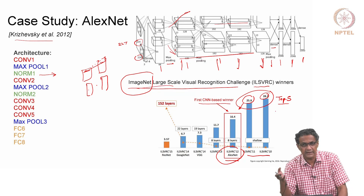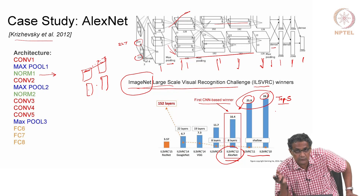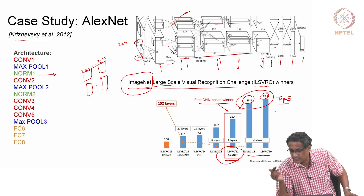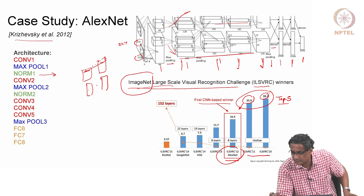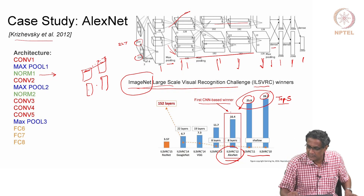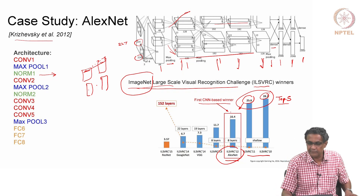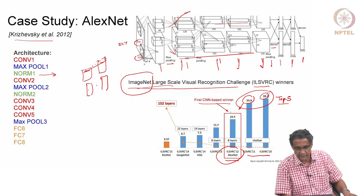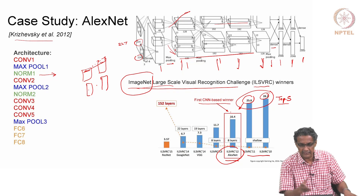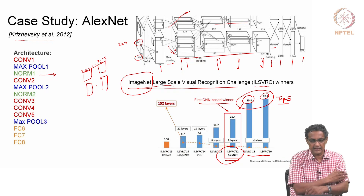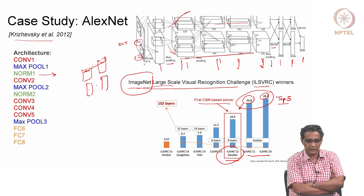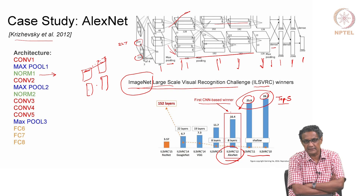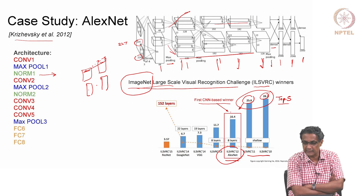In the ImageNet challenge you see 1 million images with 1000 object classes, and there was a jump from 25.8 to 16.4 error rate - that was a kind of a wake-up call for deep networks. The guy's name is Alex Krizhevsky, and this is called AlexNet, named after the guy who actually made this architecture.